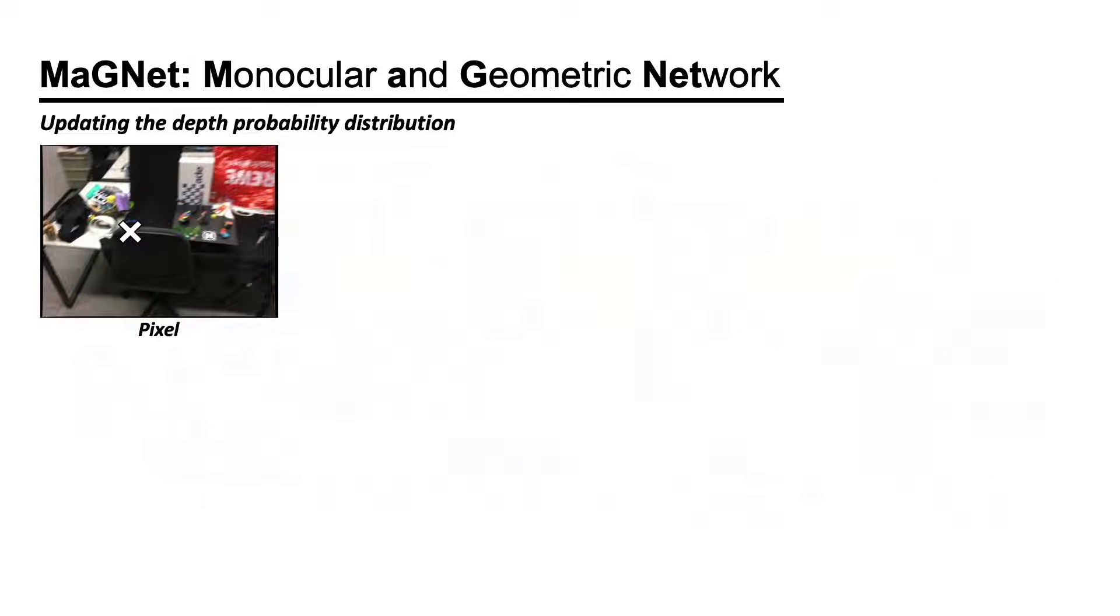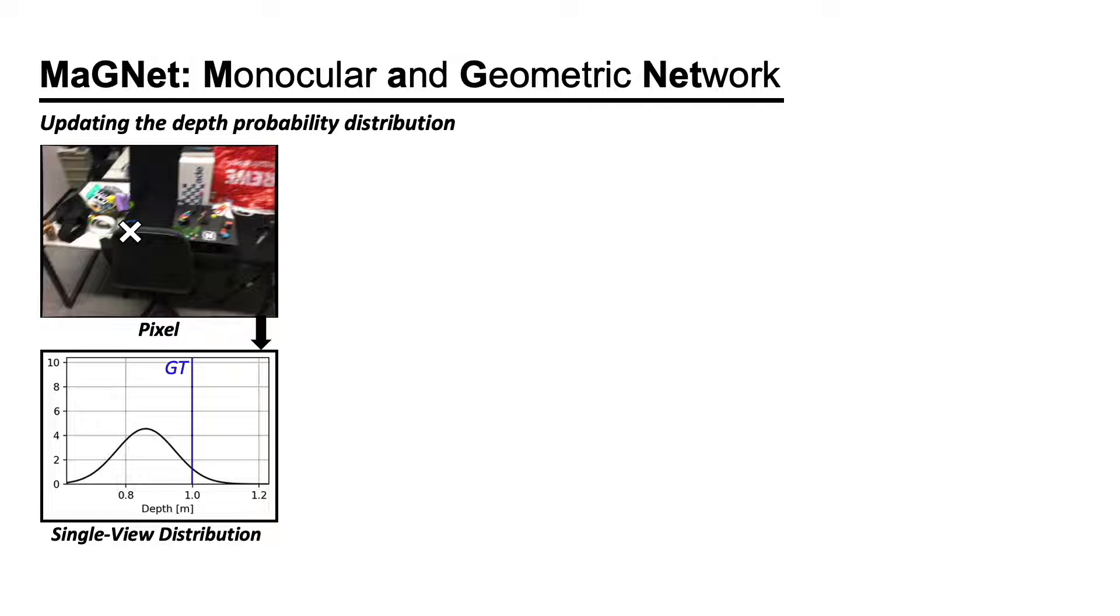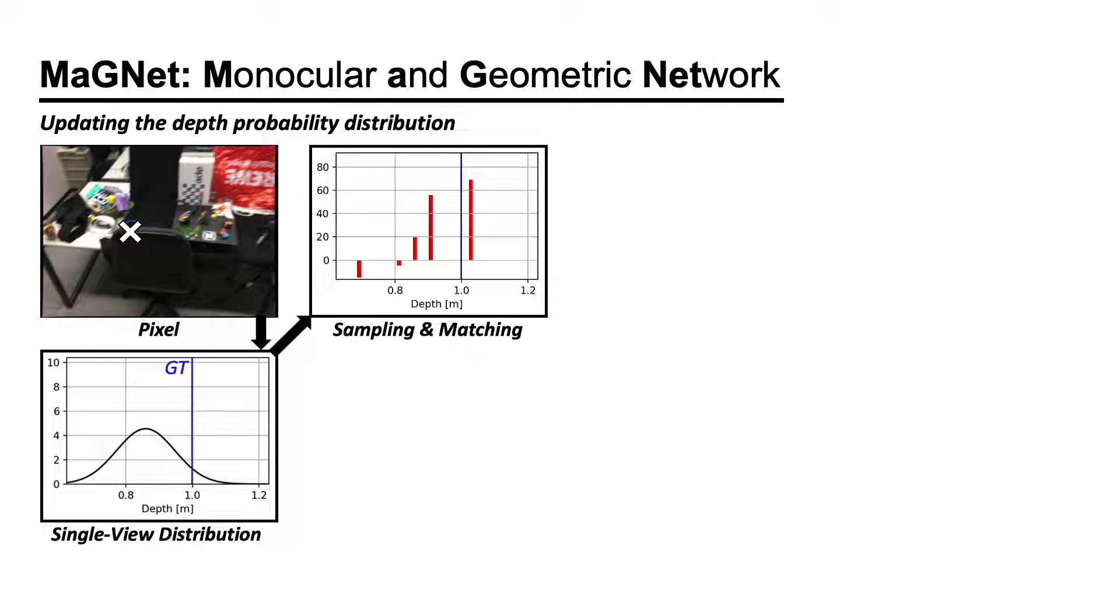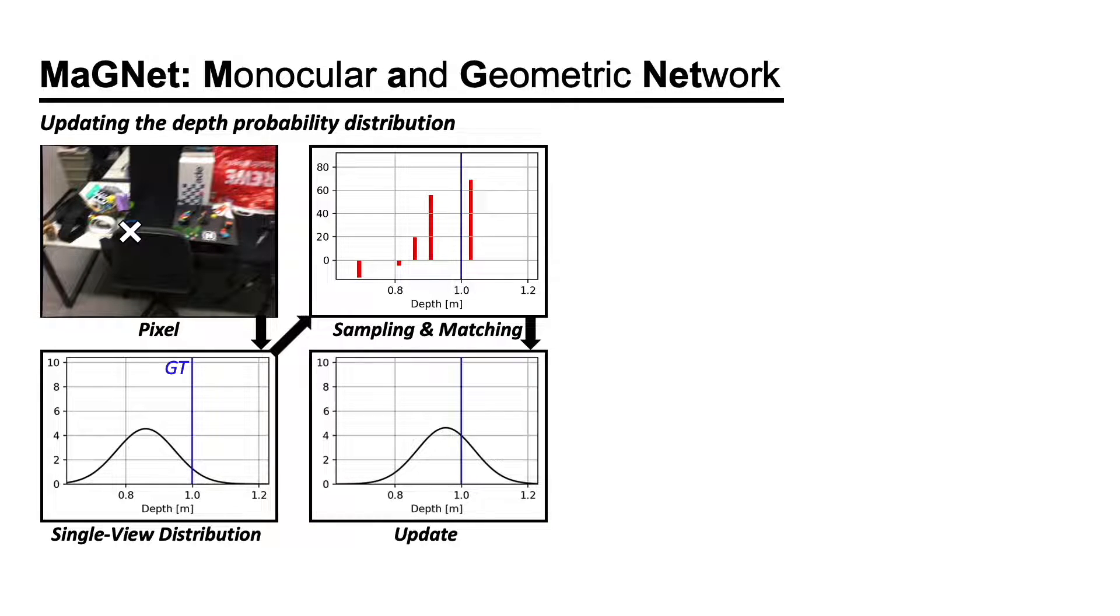Let's review the multi-view matching process. For each pixel in the reference image, we estimate the single-view depth probability distribution. Then, we sample a small number of depth candidates from that distribution and evaluate their matching scores. From this, we use a lightweight CNN to estimate the residuals of the mean and the variance.